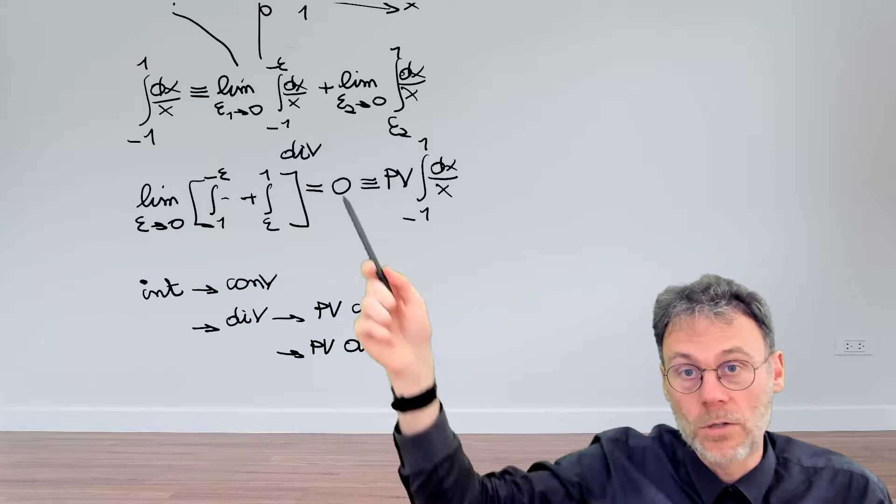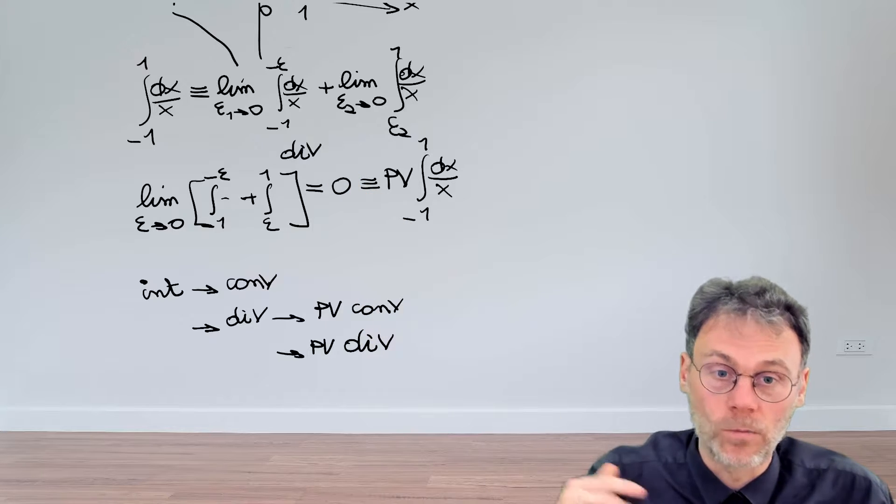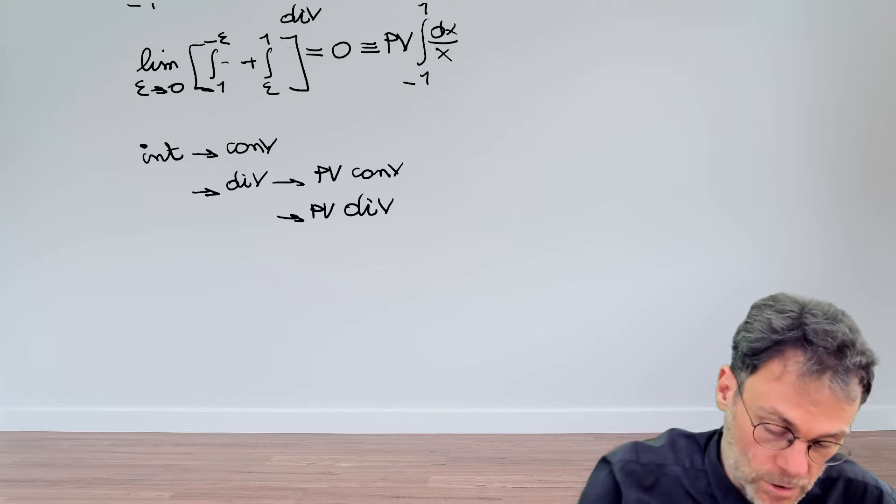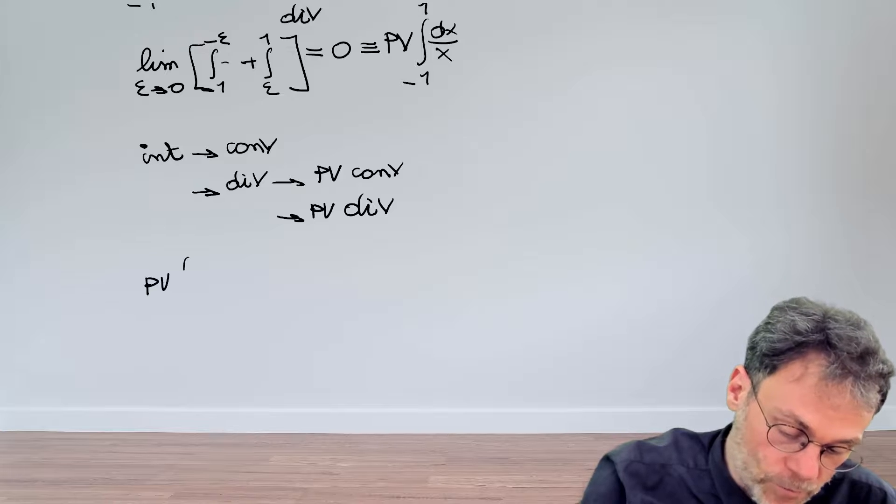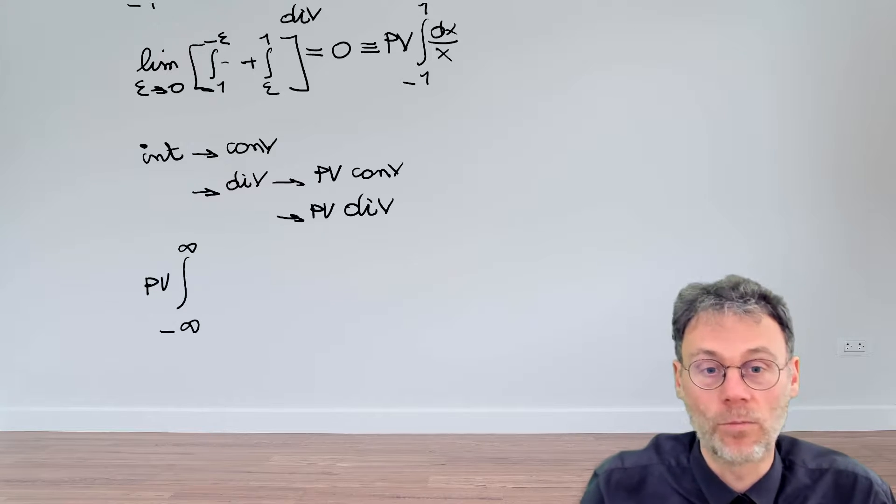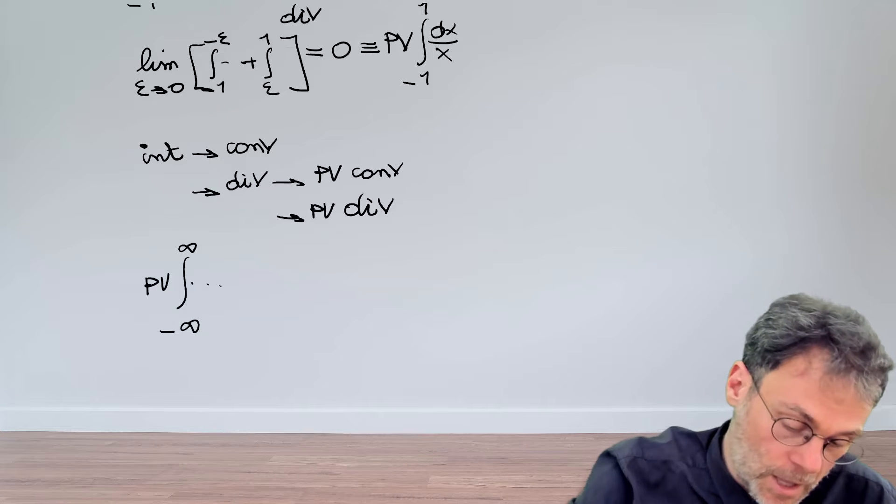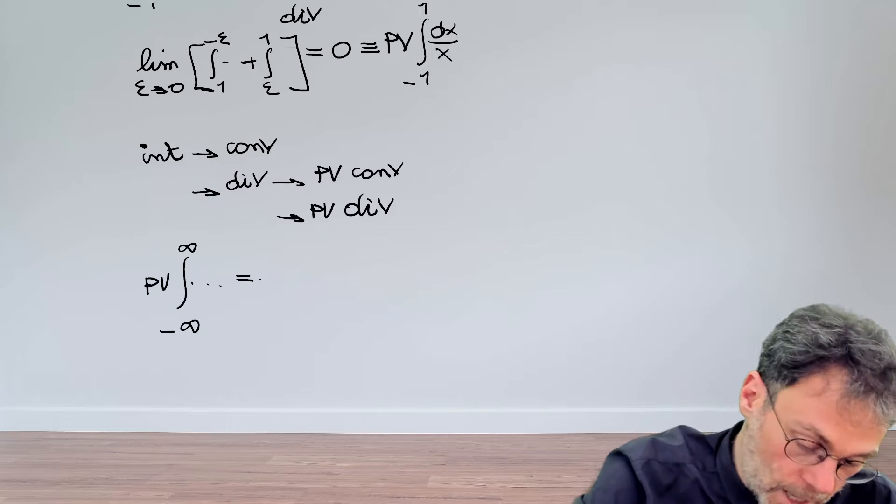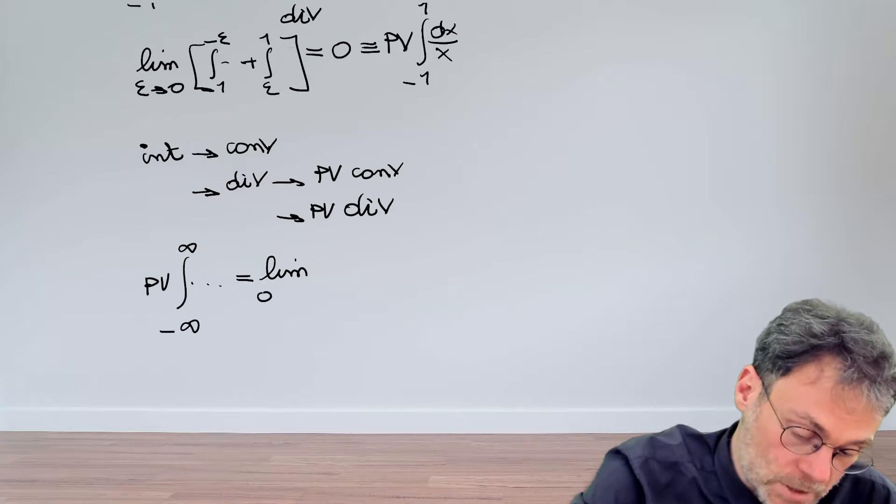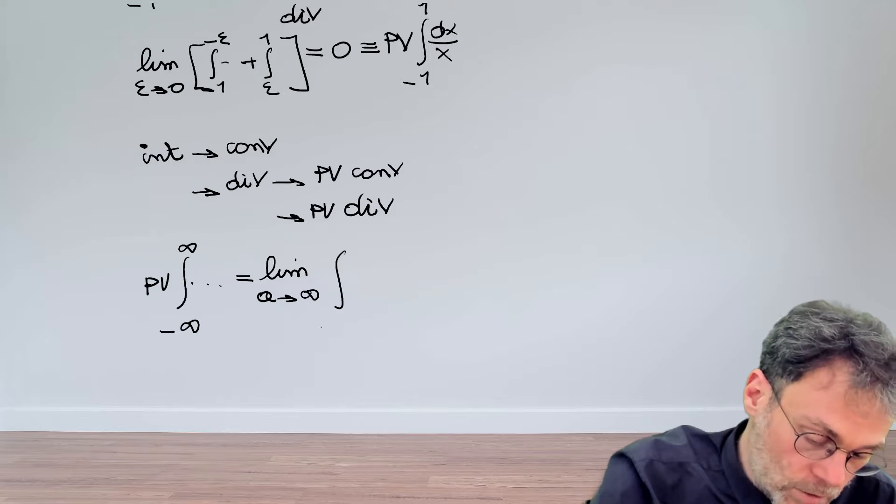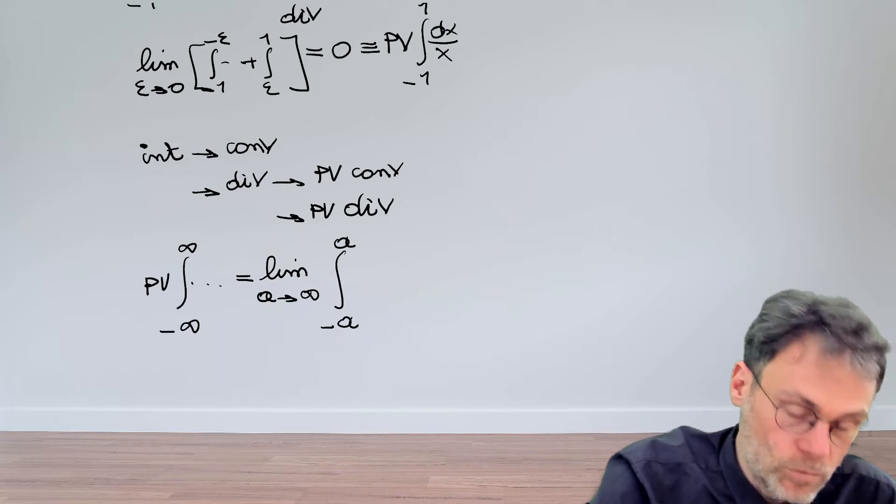Finally, so this was just with a singularity at a certain point, you can also apply the same concept to a different type of improper integral. And you look at the principal value of the integral from minus infinity to plus infinity of something, and the PV in front of that tells you that you need to interpret that as the limit of a single value a moving towards infinity of an integral from minus a to plus a.